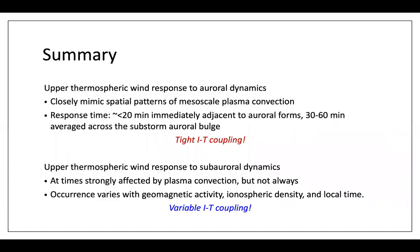In summary, the take-home message is that ionosphere-thermosphere coupling at the aurora zone is very tight, partially due to aurora precipitation. At sub-auroral latitudes, the level of coupling is variable — it can change with AE, the TEC or plasma content, the magnetic local time, and possibly universal time. That's all I wanted to cover, and I'm happy to take questions.